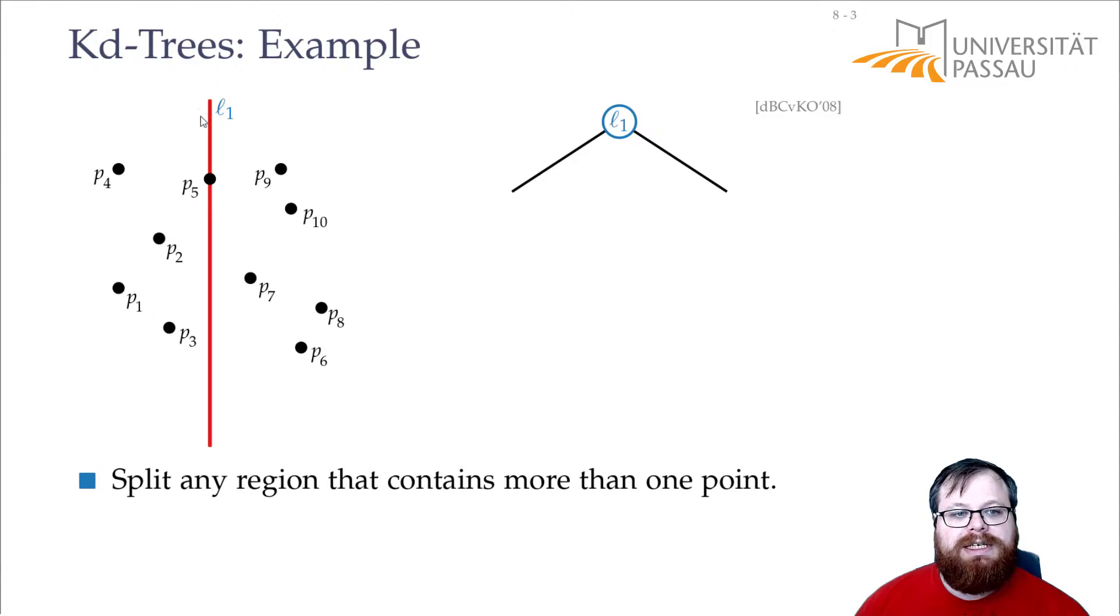The first split is by line L1 vertically, and now we go into those two regions. Let's go to the left and now we want to split it with a horizontal line.